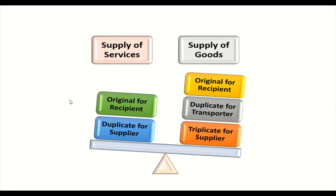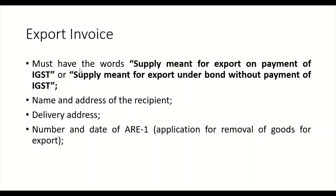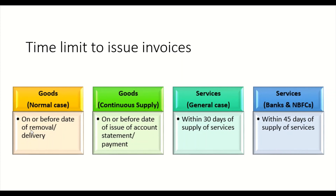For an export invoice, the invoice must contain the words 'supply meant for export on payment of IGST', or alternatively 'supply meant for export under bond or without the payment of IGST'. These are the two methods of exporting goods. The export invoice must also include the name and address of the recipient, the delivery address with country, and the application reference number for removal of goods for export.